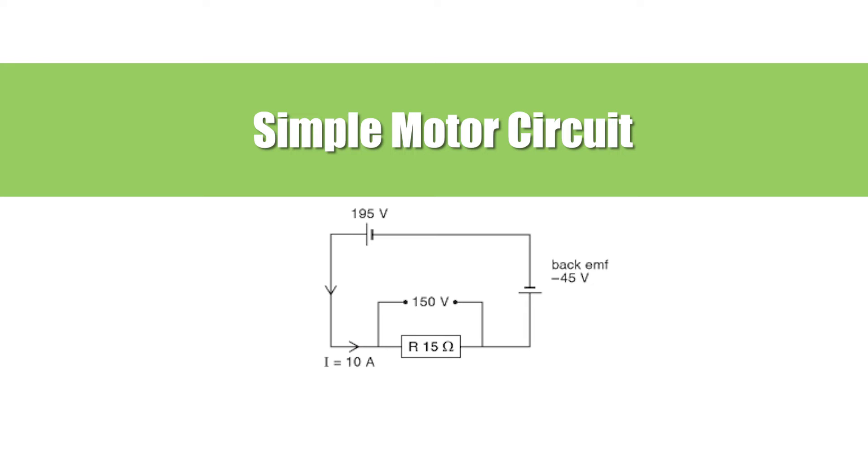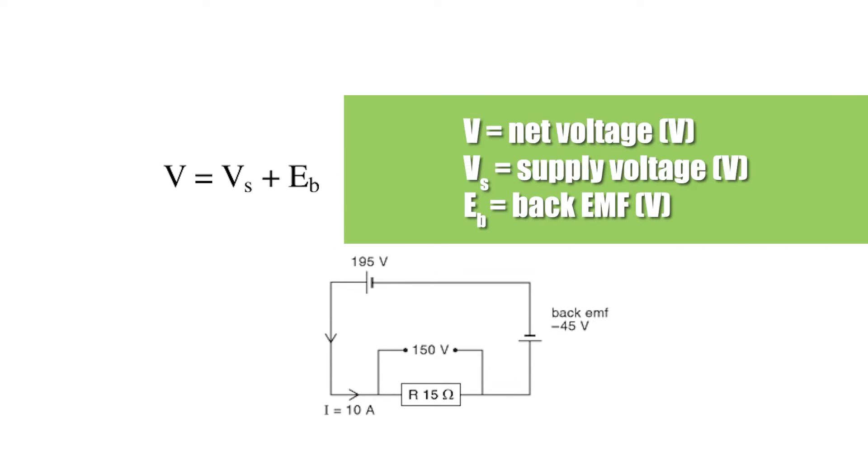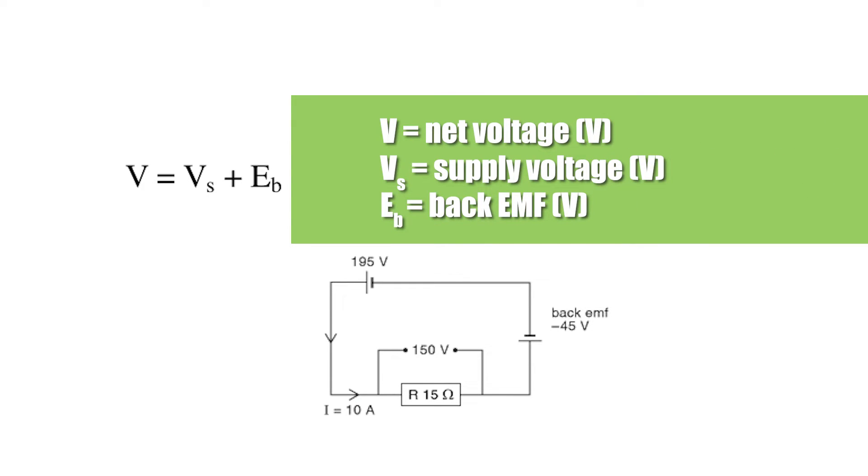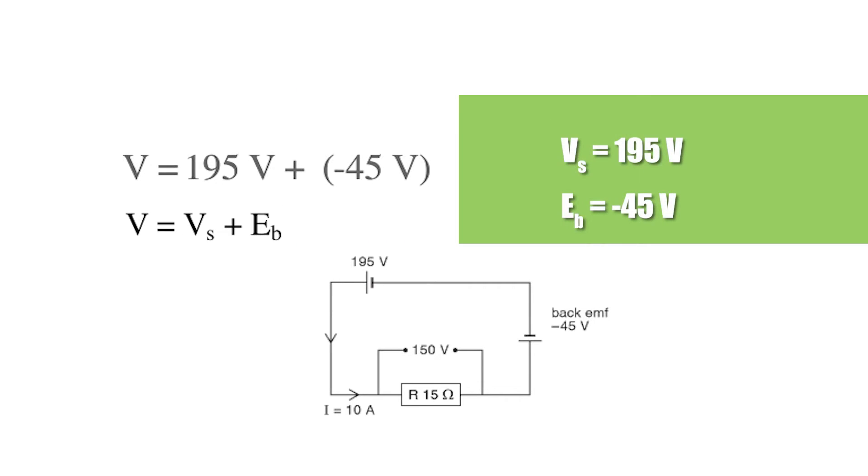To better understand this relationship between back EMF and speed, let's examine a simple motor circuit. According to the conservation of energy, the net voltage across the motor will always equal the supply voltage plus the back EMF voltage. In this example, the supply voltage equals 195 volts and the back EMF voltage is 45 volts. But remember, the back EMF opposes the supply voltage, so the net voltage is 150 volts.